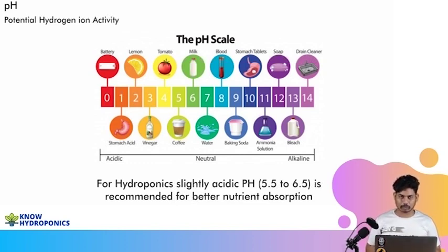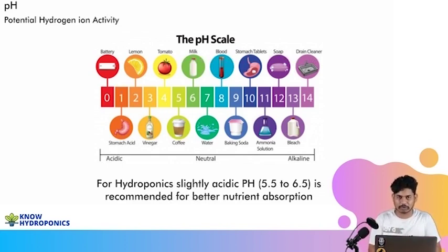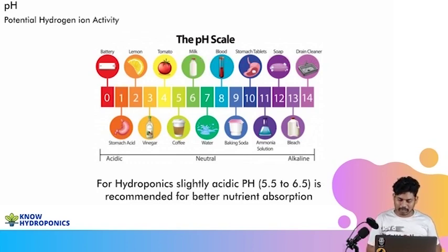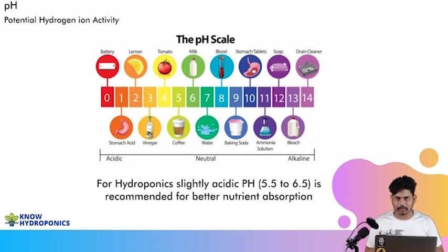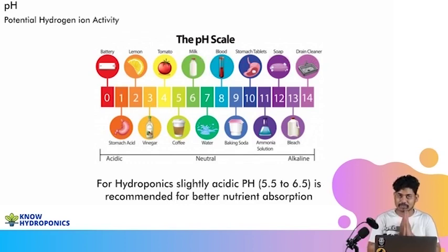When we grow plants in water, we have to make sure that the ion activity is at the proper range where all nutrient solutions are available for plant roots to uptake whenever they want. We need to maintain water that is a little bit on the acidic side from the neutral scale — a pH of 5.5 to 6.5 — to ensure that all fertilizers and elements in the water are easily consumable by plant roots. Maintaining 5.5 to 6.5 pH is very much crucial for plant growth.